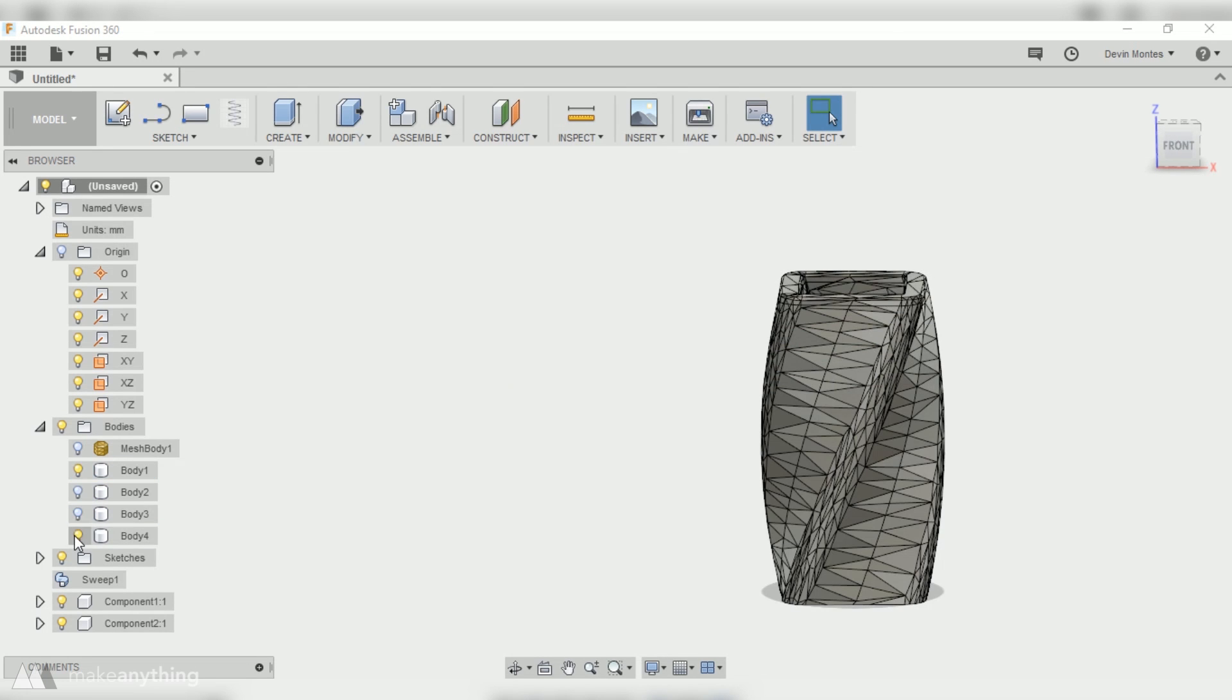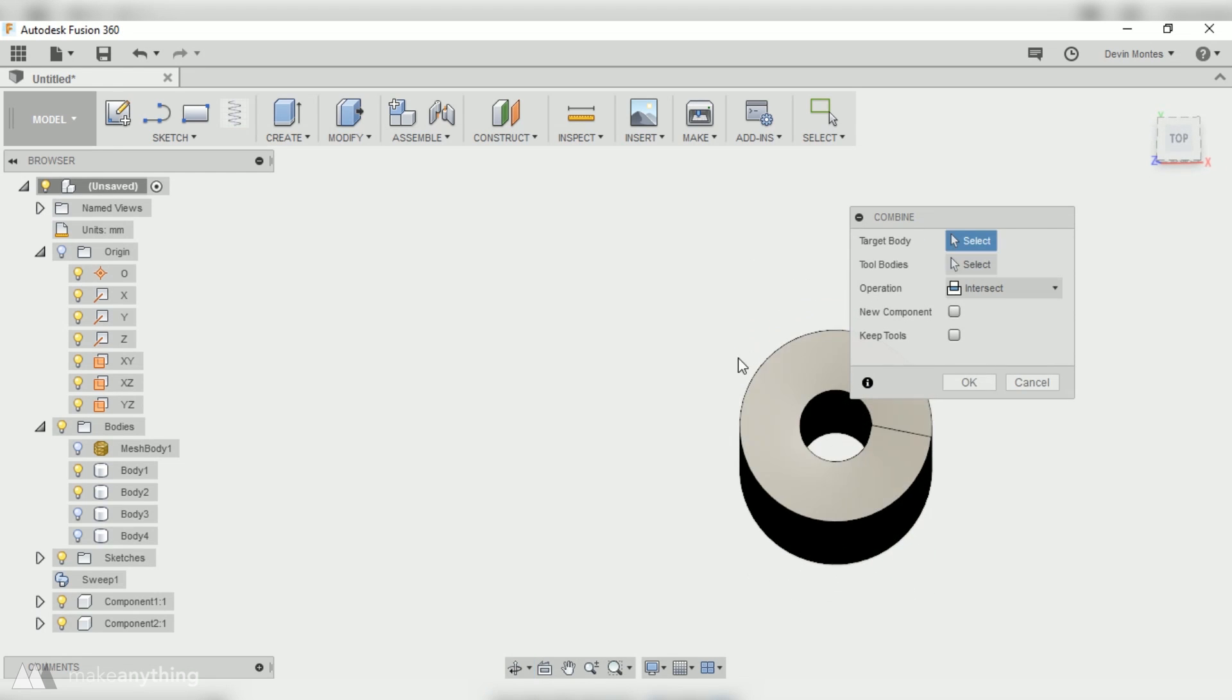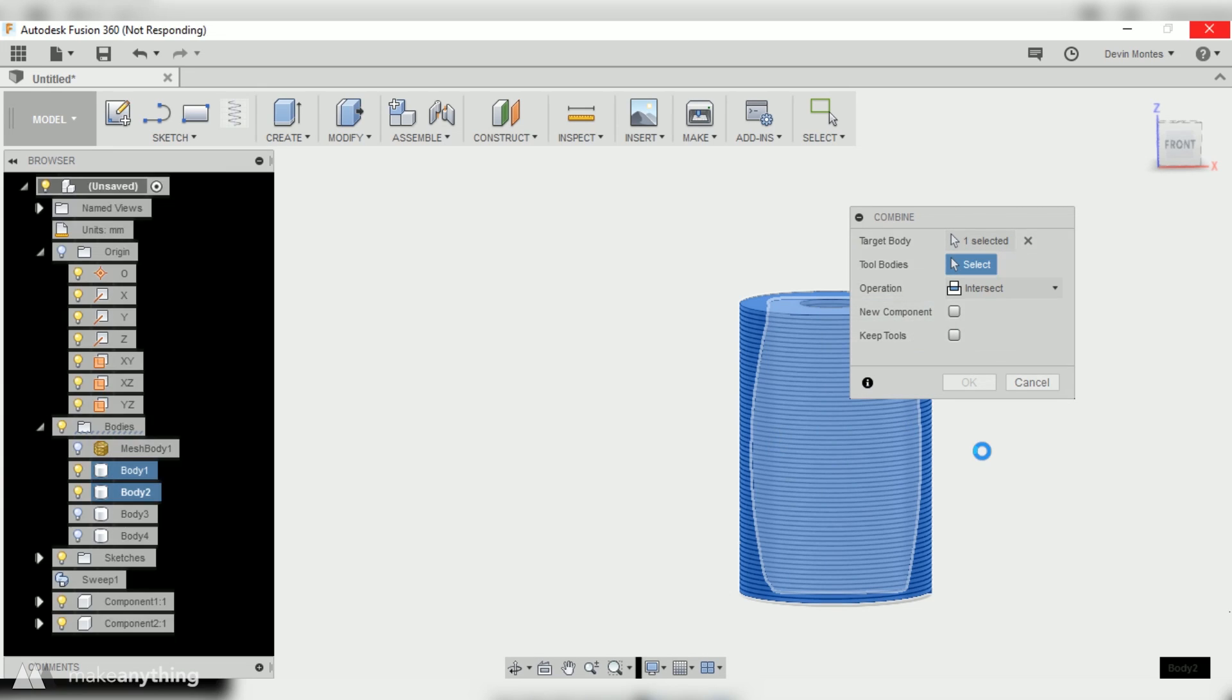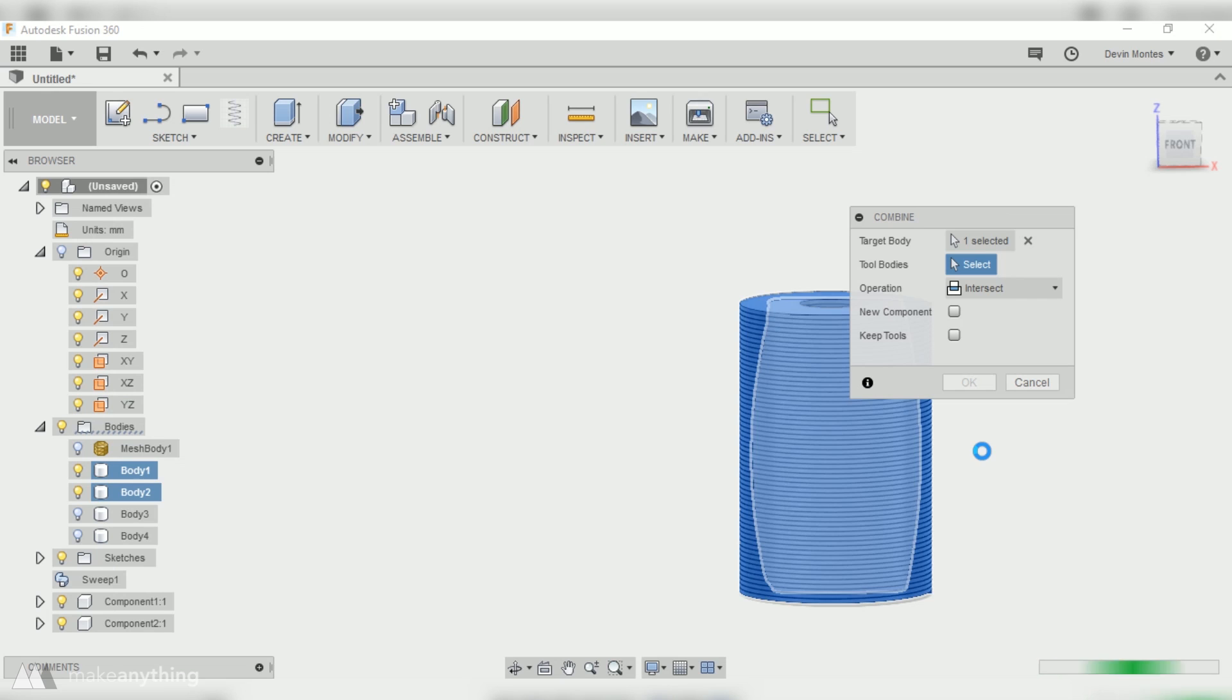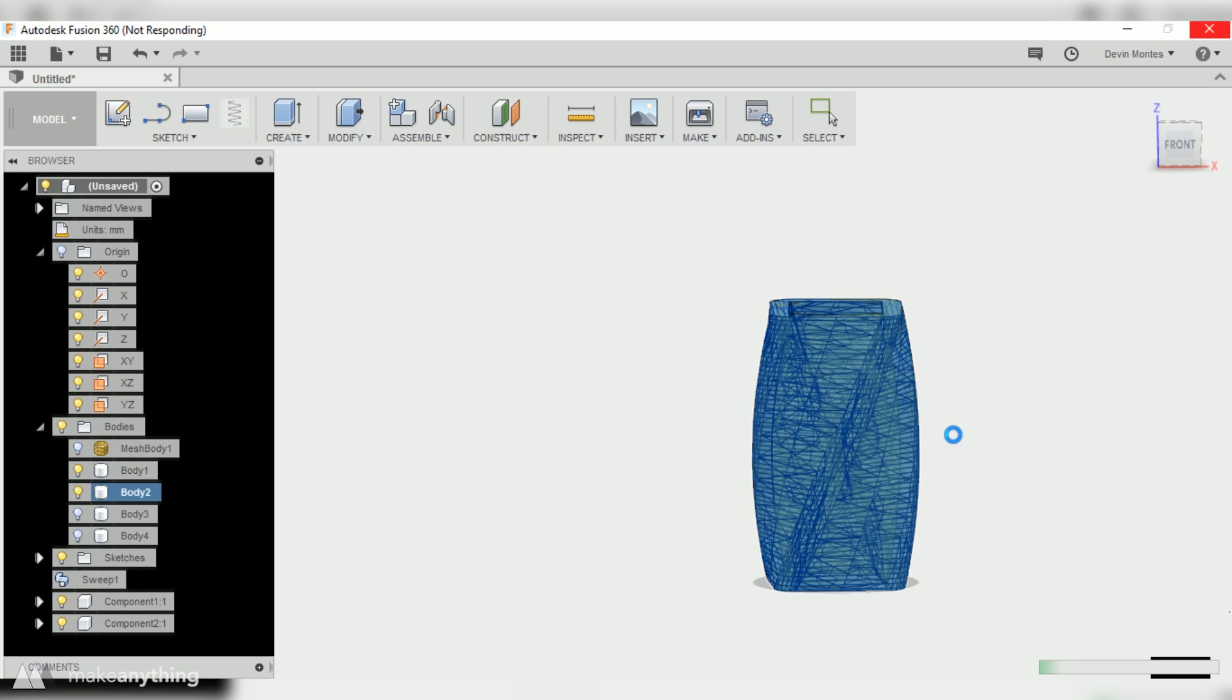I'll hide that top and bottom cap and I'll also bring back my spiral helix. Then I will use the Combine tool and select Intersect. Then I can select both that helix and the twist form. Then Fusion will go ahead and combine those parts, leaving only the areas where both of those models intersect. The result is a form that looks just like that twisted shape but with that helical gap running all the way through the shape.